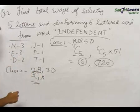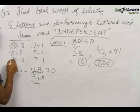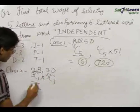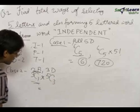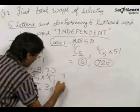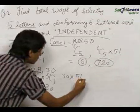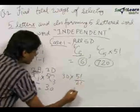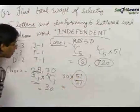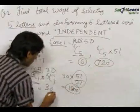So the selection becomes 3C1 × 5C3 = 3 × 10 = 30 ways. The five alphabets selected can be arranged in 5!/2! ways since two alphabets are alike, giving 120/2 = 60. So the total number of words formed is 30 × 60 = 1800.